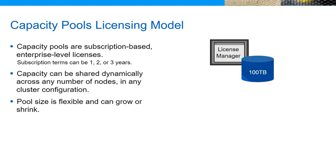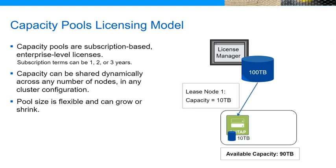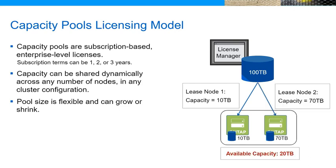In this example, a Pool license has 100 terabytes that can be allocated to ONTAP Select nodes. The first node leases 10 terabytes, making the available capacity 90 terabytes. The second node leases 70 terabytes, and the available capacity is now 20 terabytes.